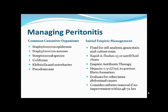If the fluid is cloudy, perform rapid flushes and add heparin to prevent fibrin clotting, since inflammation causes fibrin that can clot the catheter. If the patient is not improving over two to three days, consider resistant organisms, other intra-abdominal causes, and whether the peritoneal catheter needs to be removed. Most peritonitis can be treated with intraperitoneal antibiotics if there is no sepsis.